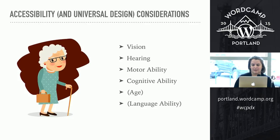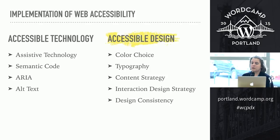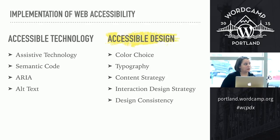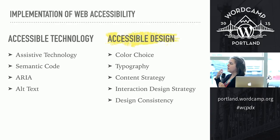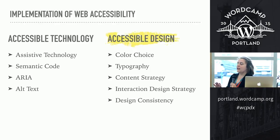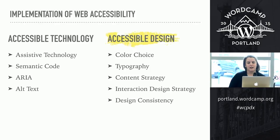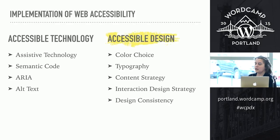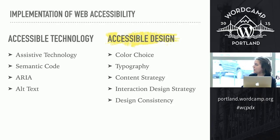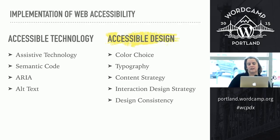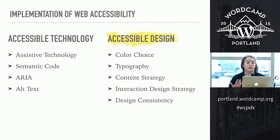When I think of accessibility, I think of it in two ways. There's making the technology accessible so that it's compatible with things like screen readers and assistive technology — this includes having good code using ARIA and alt text. I'm not covering that today; there are other presentations at WordCamps where the videos are available at WordCamp.tv. What I want to talk about is accessible design: the strategy of content, interaction design, design consistency, and how we can meet the needs of the older population.